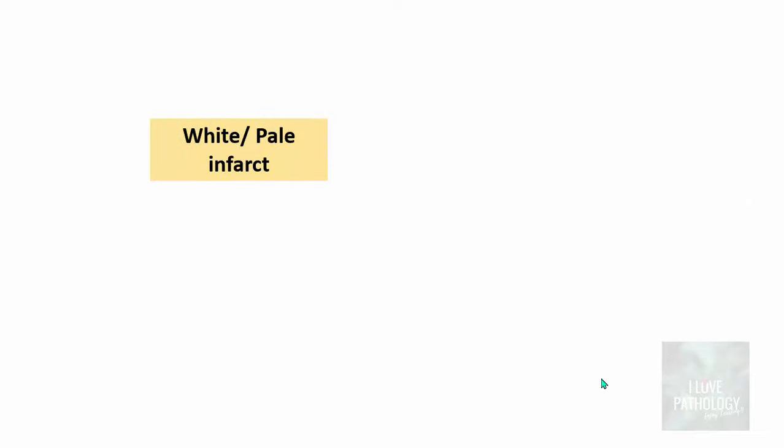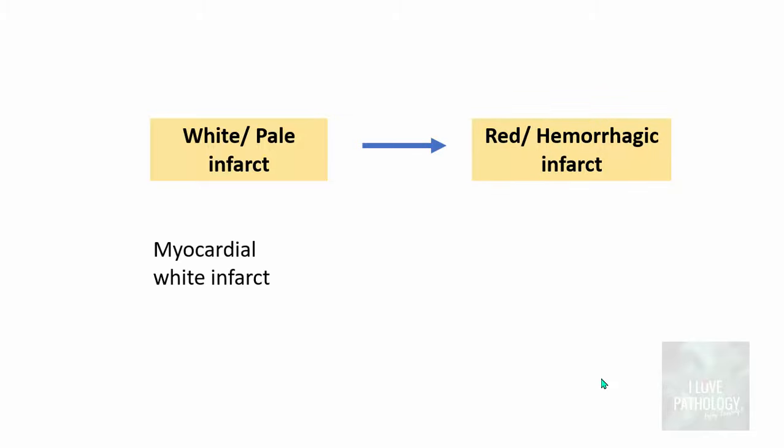Sometimes white infarcts can be converted to red or hemorrhagic infarcts. For example, in myocardial infarction, once there is infarction due to occlusion and then reperfusion occurs, the white myocardial infarct can be converted to a red infarct.